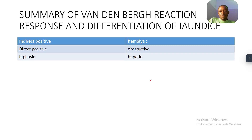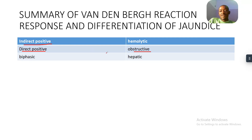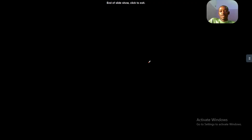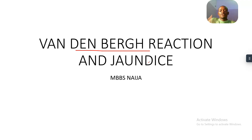In summary: the indirect Van den Bergh reaction indicates hemolytic jaundice; direct positive indicates obstructive jaundice; and biphasic indicates hepatic jaundice. This is the relationship of the Van den Bergh reaction in determining the types of jaundice. See you guys in the next tutorial.